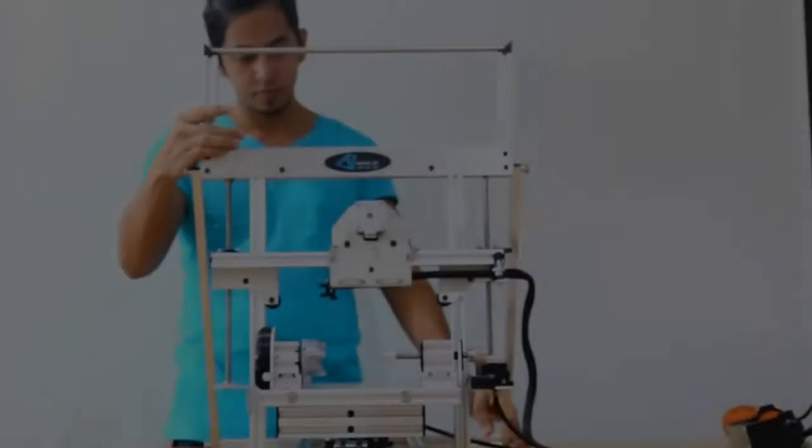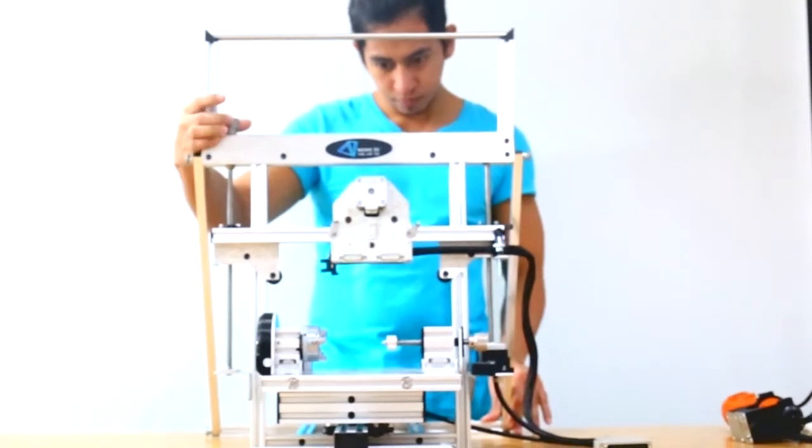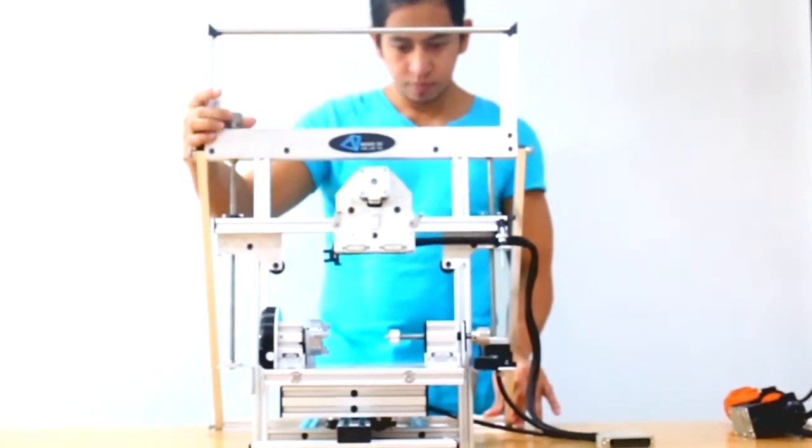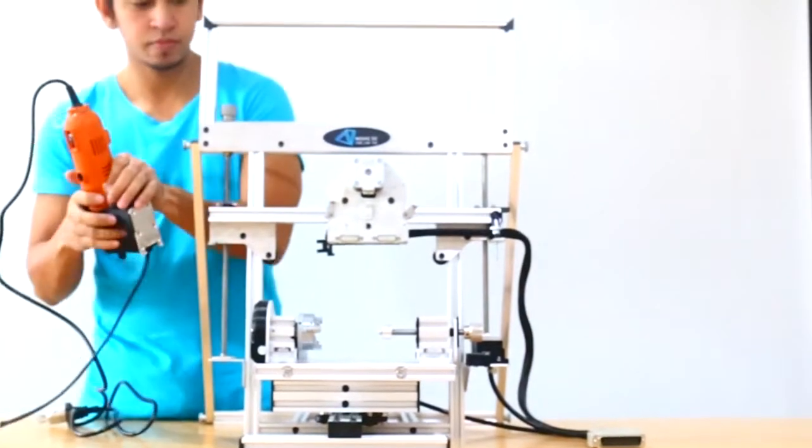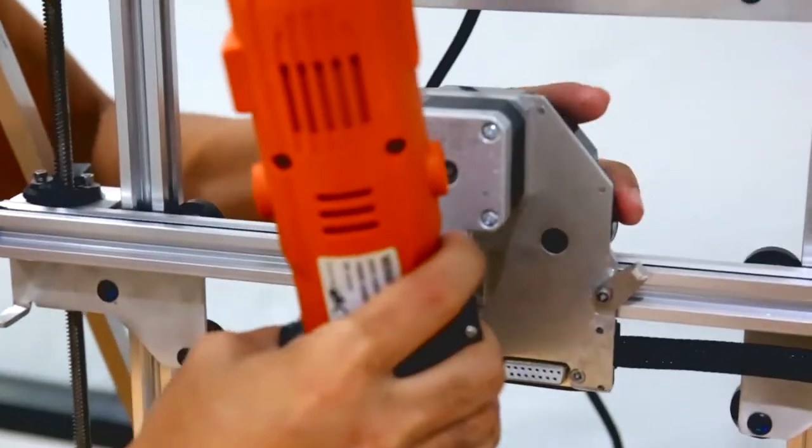Next, lift the Z axis by rotating the knob in a counter clockwise direction in order to make room for the CNC router. Attach the CNC router on the left side of the motor backplate as shown.